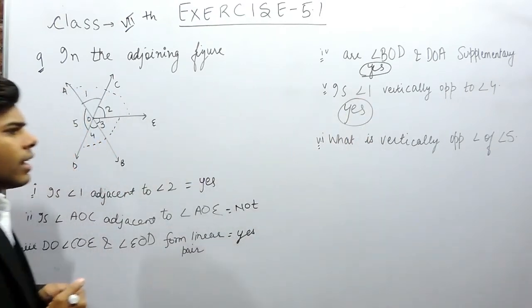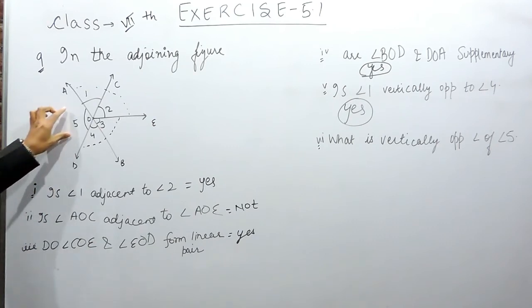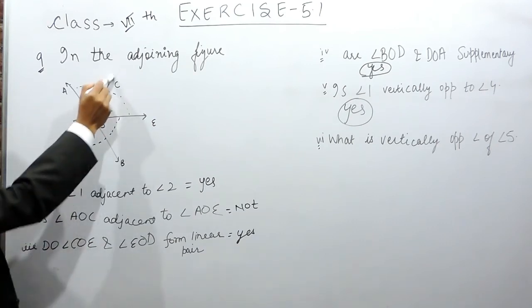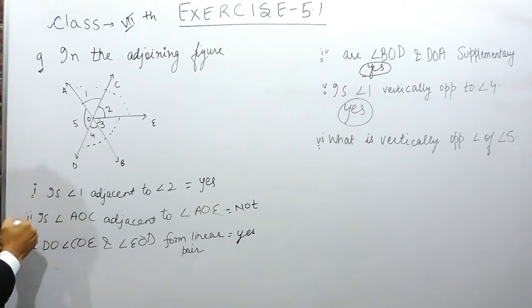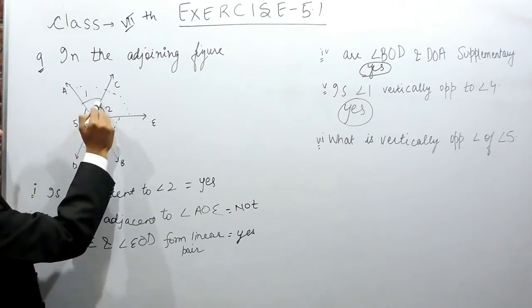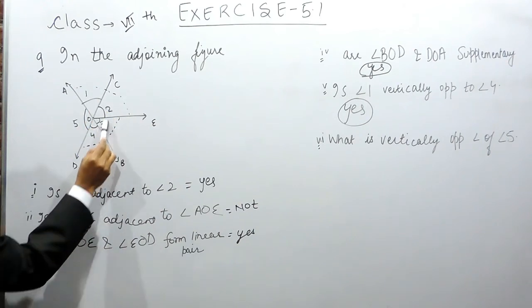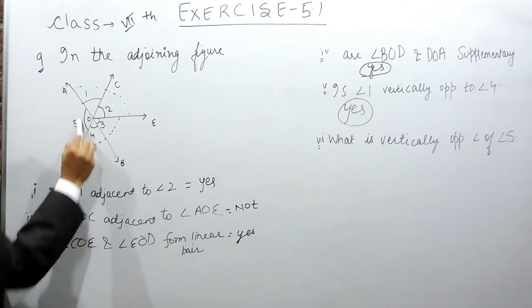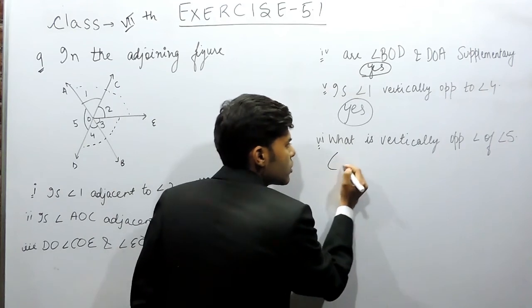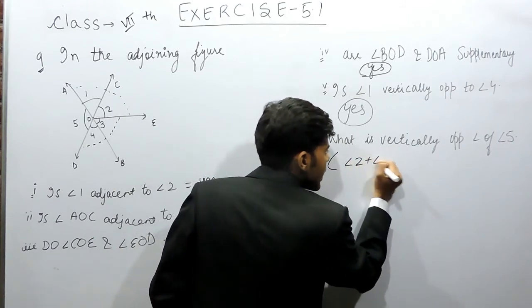And in the last part, what is the vertically opposite angle of angle 5? So this means that these two lines are intersecting. This is the common point. So angle 5 will be equal to angle 2 plus angle 3. Because this complete angle, angle 2 plus angle 3, lies in front of angle 5. So vertically opposite of angle 5 is angle 2 plus angle 3.